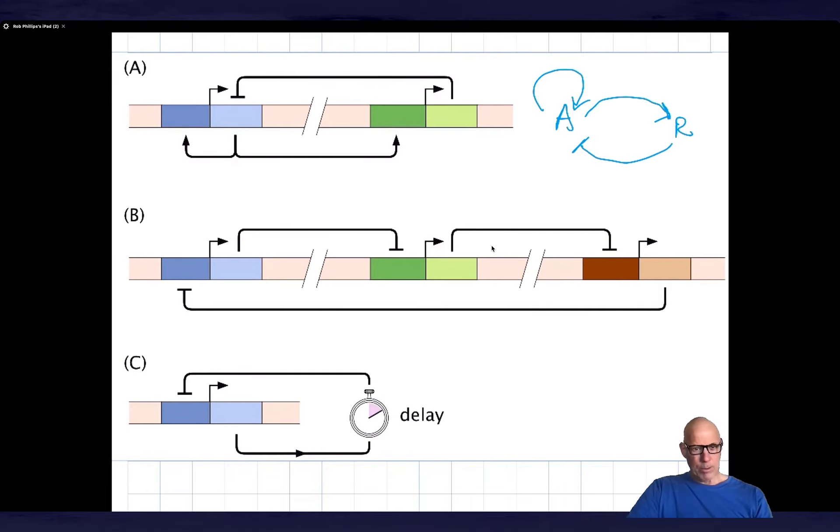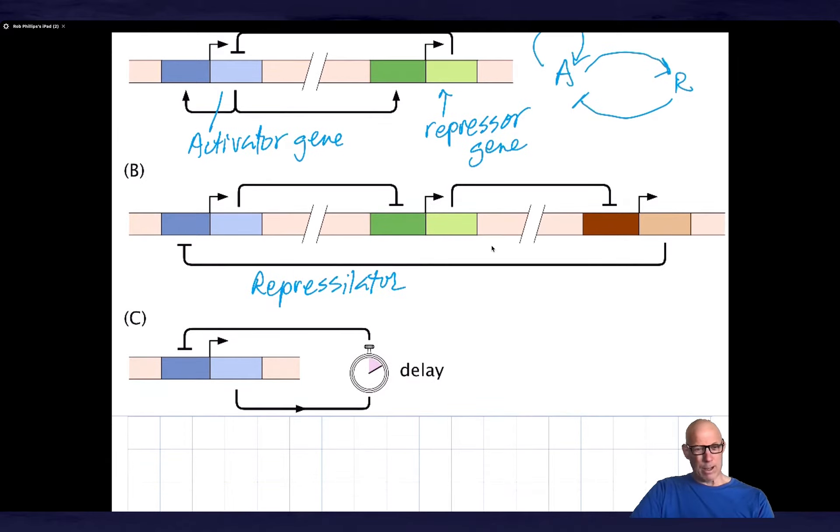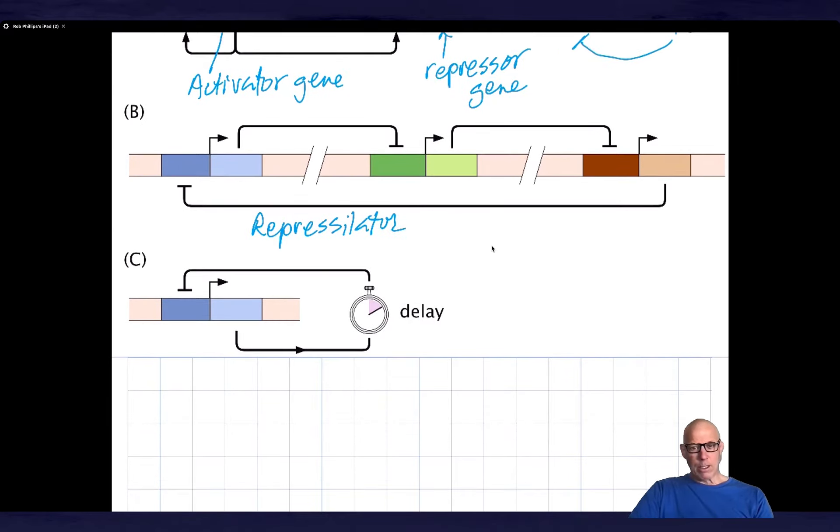So here I'm showing you the first of these circuits where the activator, you can see, is here. This is the activator gene. And this is the repressor gene. The second one is what's known as the repressilator. And I highly recommend that you go take a look in the literature so you can see how this thing operates. I may well have it as a homework.